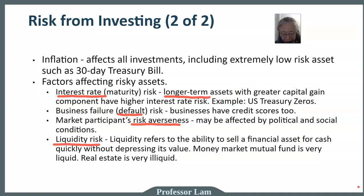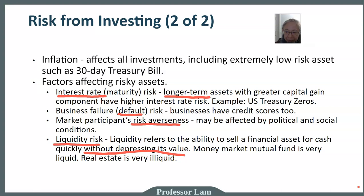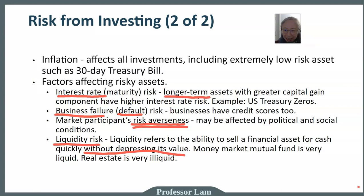A final risk component is liquidity risk. In investment and finance, liquidity refers to your ability to sell something and convert it to cash quickly when you need to — and crucially, without having to lower the price. For example, a money market mutual fund is very liquid, almost like a savings account, whereas real estate can be very illiquid — in a down market it can be very difficult to sell. These are the major types of risks: interest rate risk, default risk, changes in risk aversion of market participants, and liquidity risk.